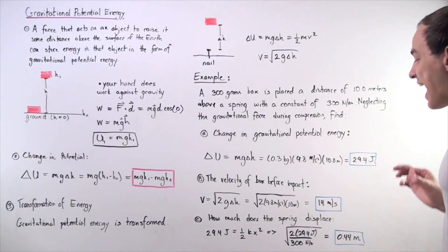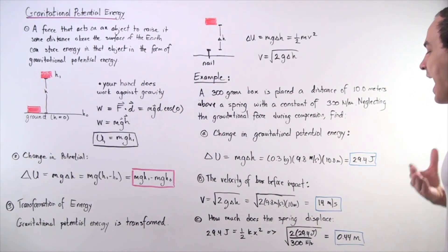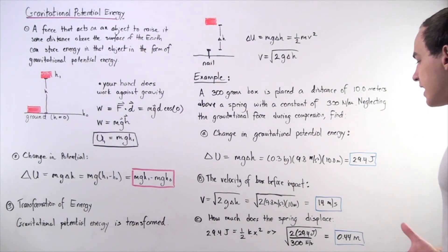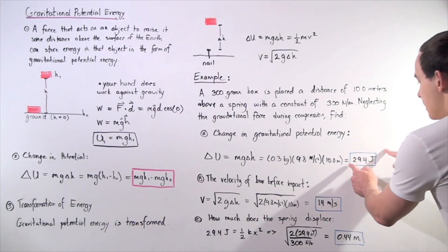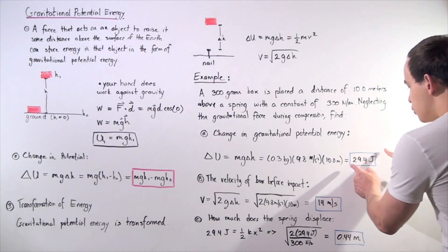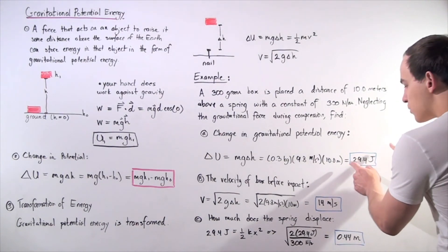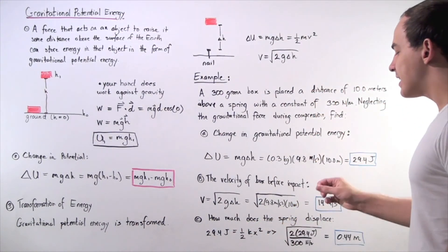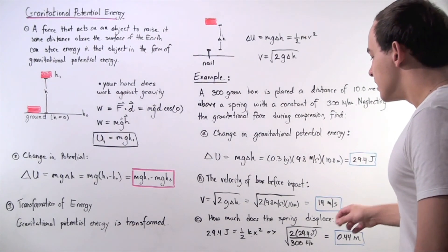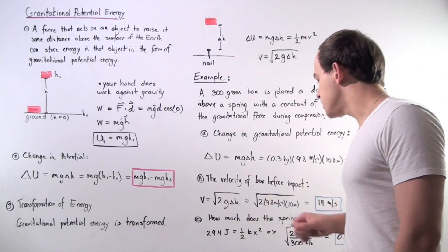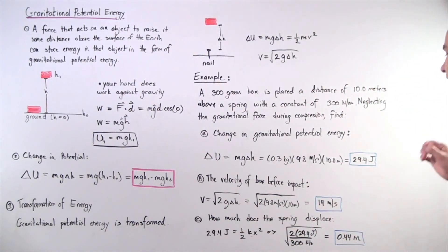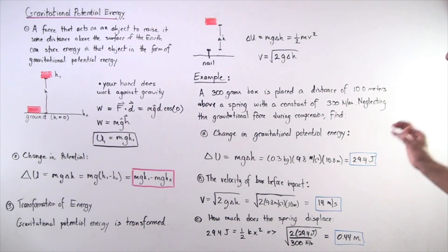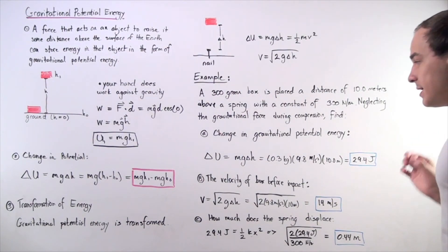Using this, let's calculate how much the spring displaces. This energy goes into displacing the spring, so 29.4 joules equals one-half kx squared. Bringing the 2 over, dividing both sides by k, and taking the square root, we find that the spring displaces a distance of 0.44 meters.